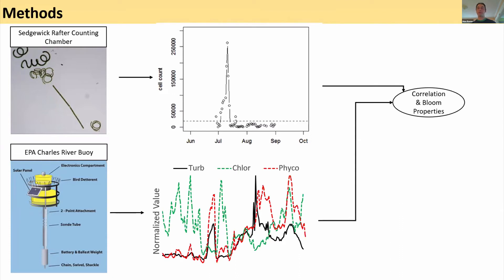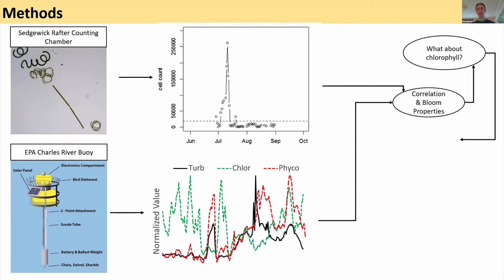So our project is about understanding what are the bloom properties — using our cell count data to unlock the EPA buoy data and understand what the bloom looks like on a buoy, taking a detour to talk about chlorophyll, and then constructing models that allow us to use the buoy sensor parameters to estimate cell density. In Massachusetts, as we all know, we use a 70,000 cells per milliliter threshold to say when we've got a serious bloom. This study is geared towards producing a tool compatible with that way of thinking, and we've added a probability piece to help folks interpret the output of this model.